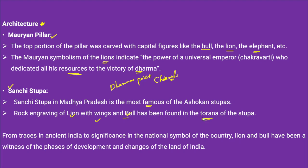This is the overall significance of the lion and bull in Indian mythology, culture, architecture, and art. In the conclusion, mention that from traces in ancient India to the national symbol of the country — the Lion Capital at Sarnath which also features lion and bull — these animals have witnessed phases of development and change over time. They represent India's culture, evolving from prehistoric times to the modern era.